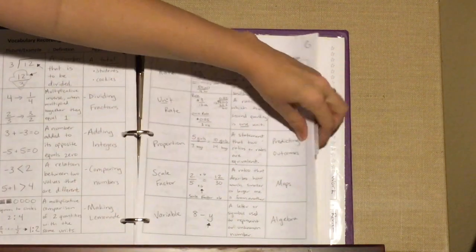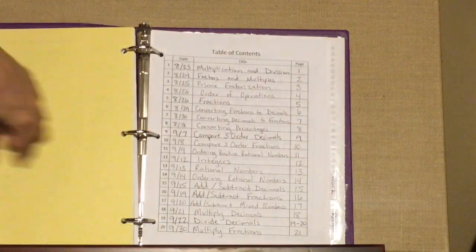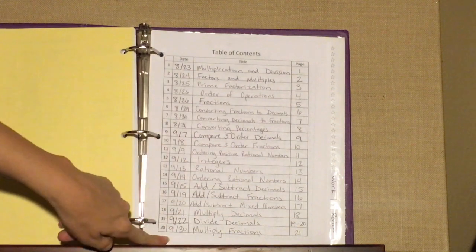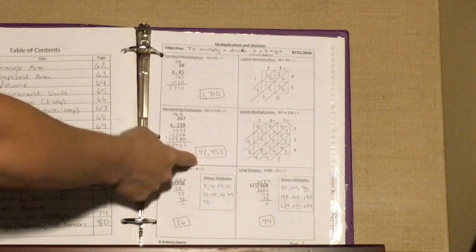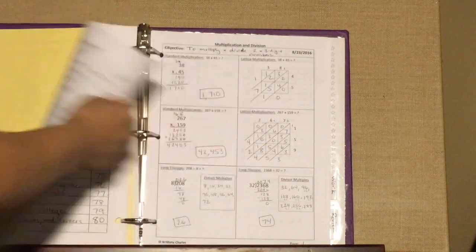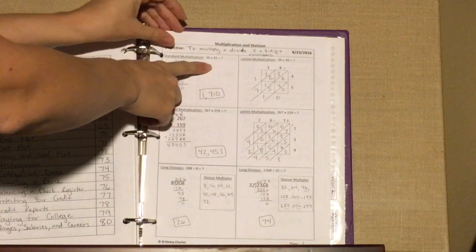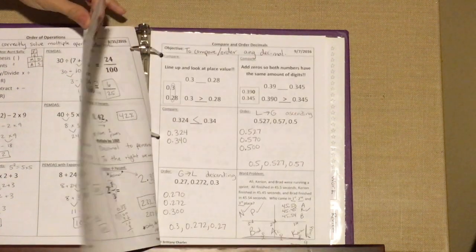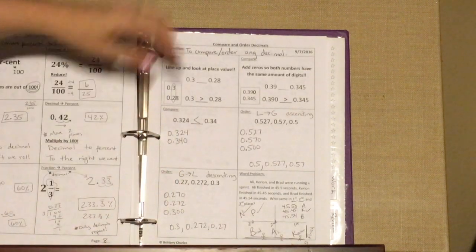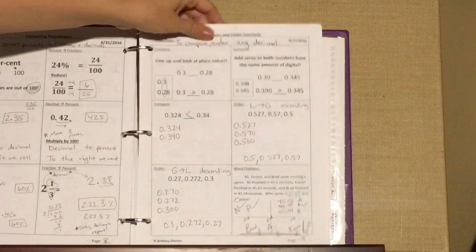Okay, and then the next section is notes. Their notes section should start with the table of contents, and they should be going in order as well. So the first notes page will be the first item. And again, it will be from the beginning of the year, and it will progress by date as it goes on. So the most recent notes will always be in the back.